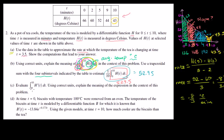We're now on part C. Evaluate the definite integral from 0 to 10 of h prime of t dt. Using correct units, explain the meaning of the expression in the context of this problem.